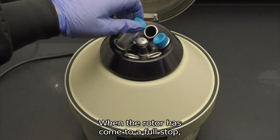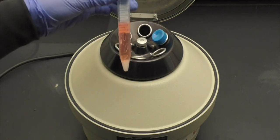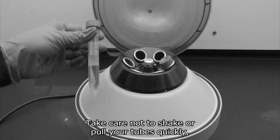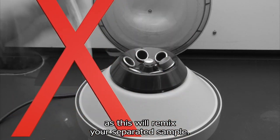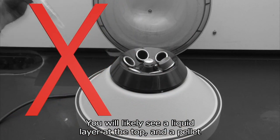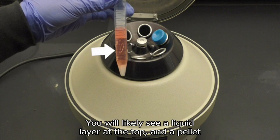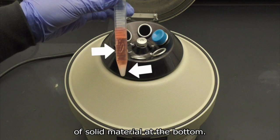When the rotor has come to a full stop, remove your samples carefully. Take care not to shake or pull your tubes quickly as this will remix your separated sample. You will likely see a liquid layer at the top and a pellet of solid material at the bottom.